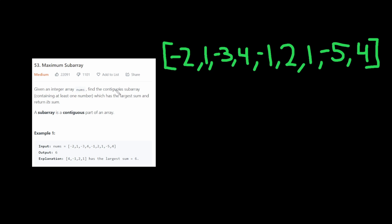A subarray, as it says here, is a contiguous part of an array. Meaning that this is a subarray but this is not a subarray because this has a gap in it. Now in this case the largest sum from a subarray is 6 because this has a sum of 6.